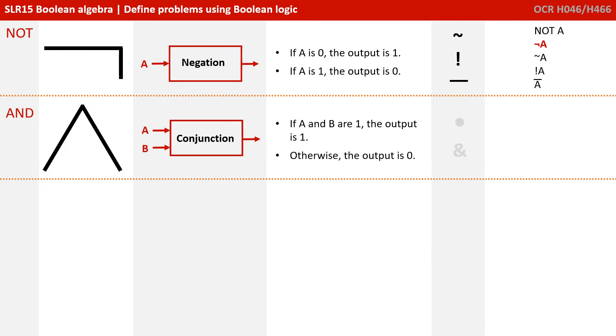The next piece of Boolean logic you need to be aware of is AND, and that's shown by this kind of caret or mountain style symbol. It's also known as conjunction. So with AND, if A and B are 1, so if both the inputs are 1 or true, the output is 1 or true. Otherwise the output is 0 or false.